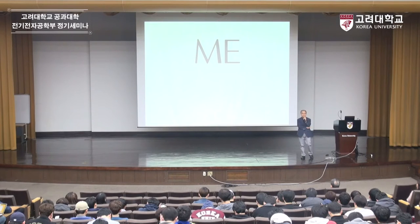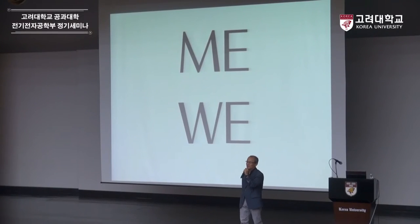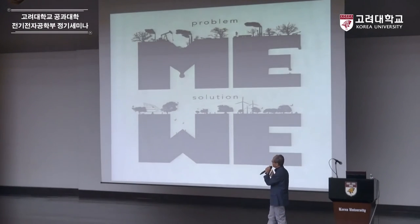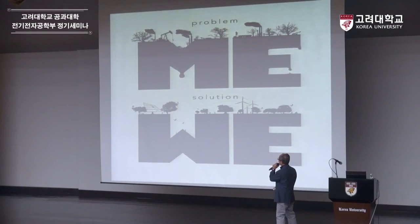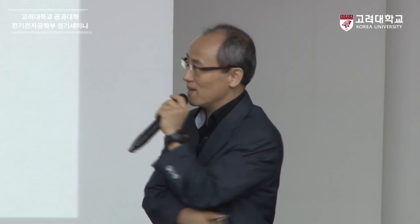영어 단어입니다. 'ME'입니다. 무슨 뜻이죠? 나입니다. 이 단어를 뒤집으면 어떻게 될까요? 'WE'가 됩니다. 나와 우리는 아주 간단하지만 조금의 차이가 엄청난 차이를 가져오죠. 오늘 우리가 나가 아니라 우리라는 부분으로 삶을 바꾸면 어떻게 될까요? 나만을 위해 살아갈 때 지구는 아픕니다. 우리가 나가 아니라 우리의 관점에서 세상을 바라보고 살아갈 때 지구는 좀 더 건강한 세상이 됩니다.